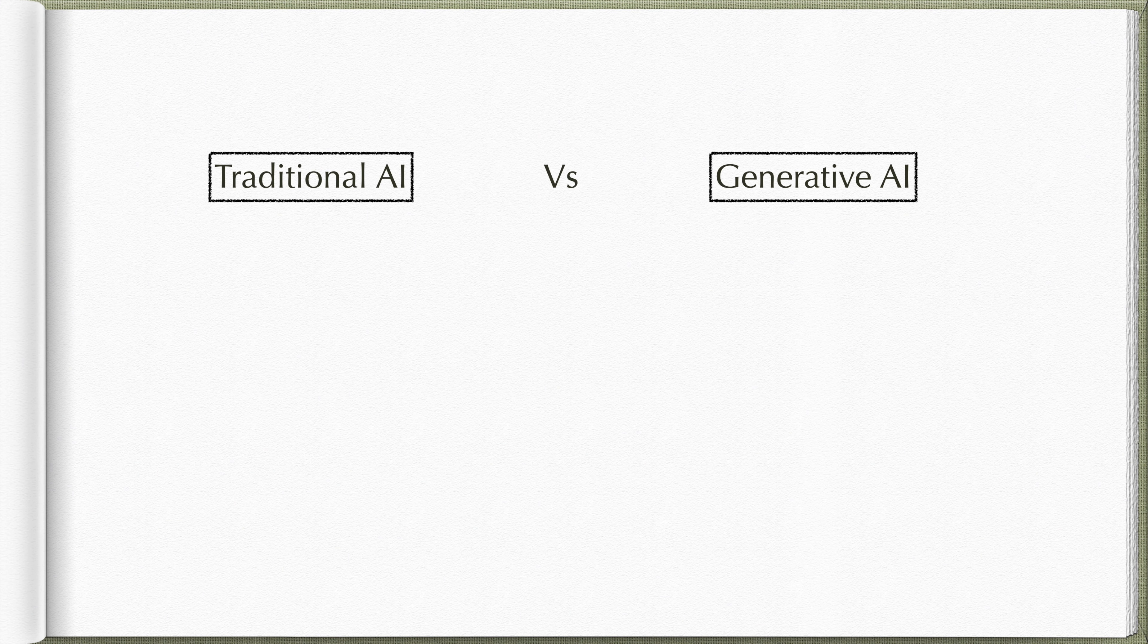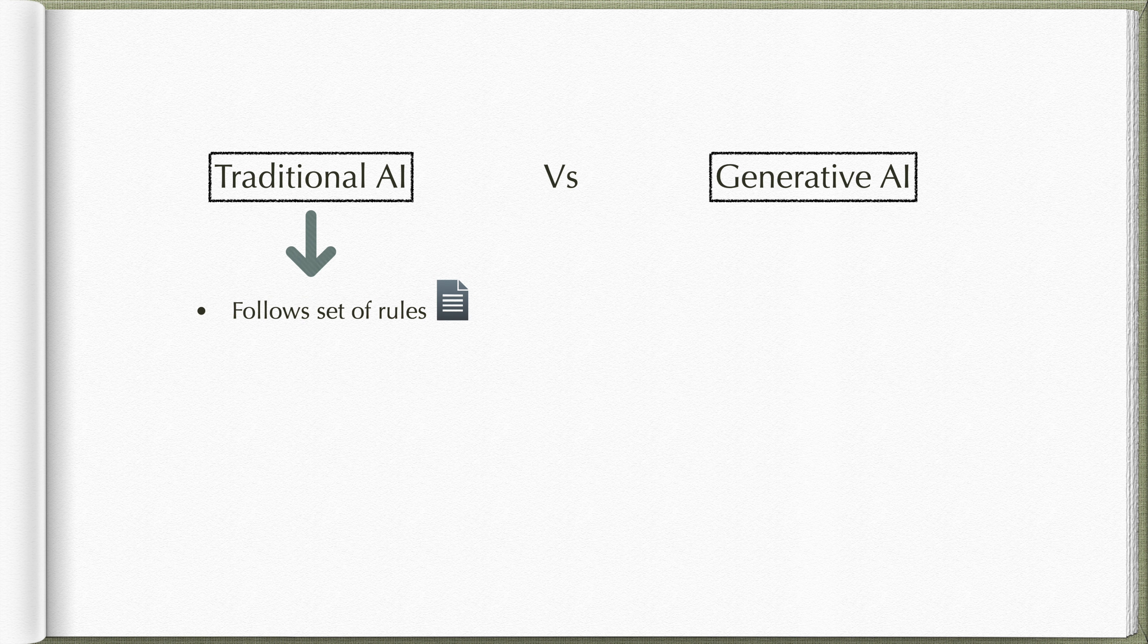So traditional AI follows a set of rules like a recipe. It is great for tasks with very clear guidelines or steps, but it struggles when creativity is involved.